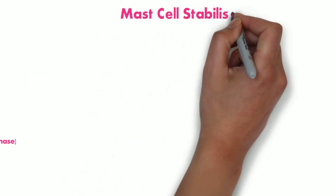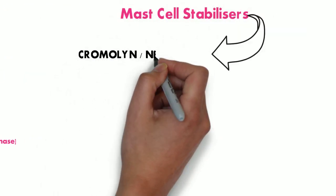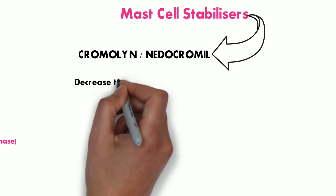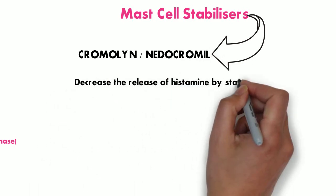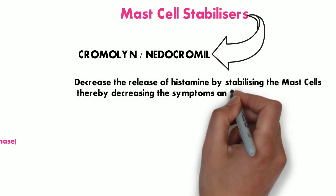Coming to mast cell stabilizers, we have cromolyn and nedocromil. These stabilize the mast cells and prevent the release of histamine from them.